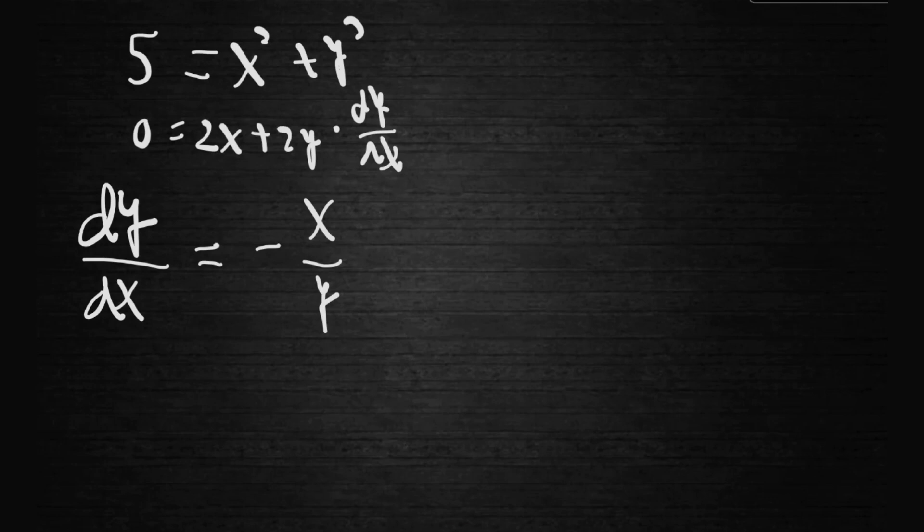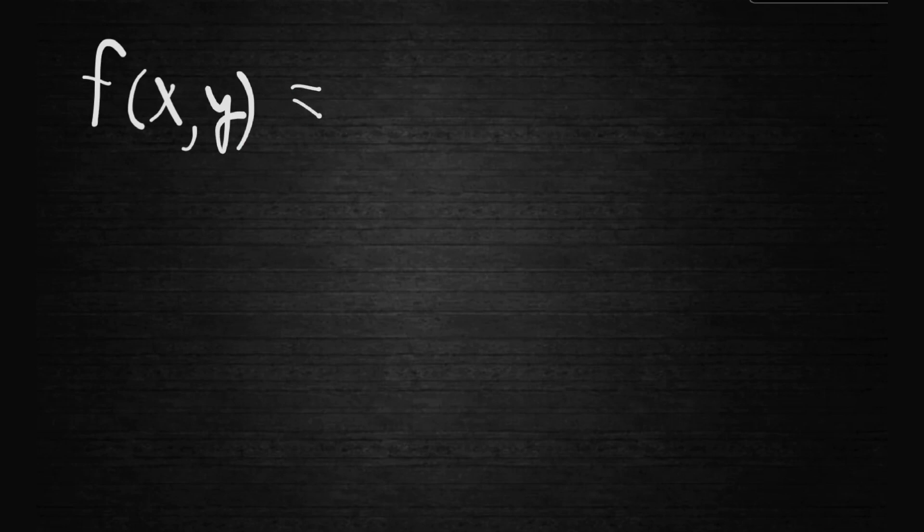For example, let's say we have a function of two variables f(x, y). Let me quickly rewrite this. Let's say we have a certain function that utilizes both variables where we could do implicit differentiation, but we could also do partial differentiation. Let's say it is x squared plus y squared.